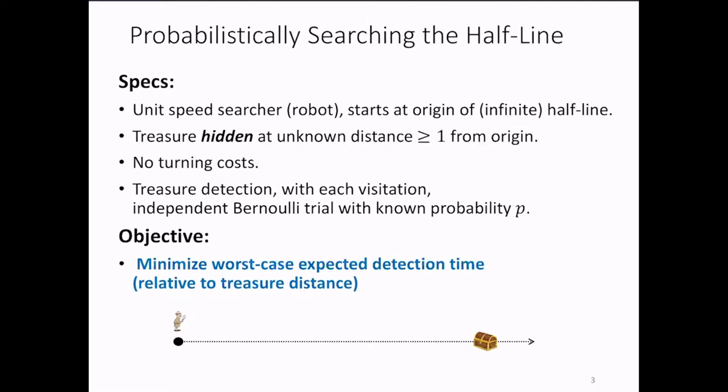Another way to think about it is that the searcher is faulty and fails to detect the treasure with probability one minus P, independently and with every trial. The objective is to design searcher's trajectories so as to minimize the worst-case expected detection time.